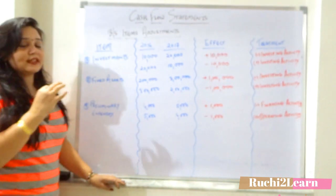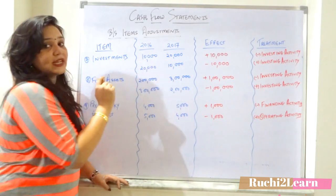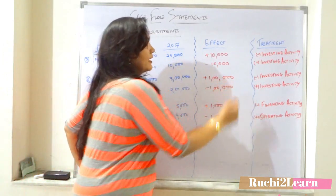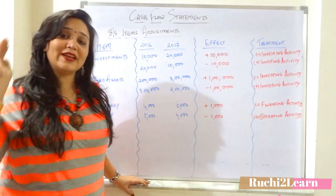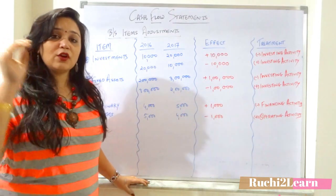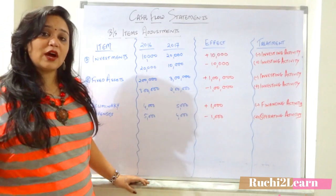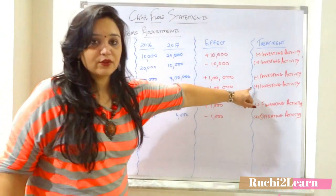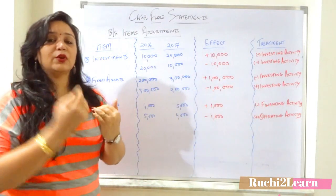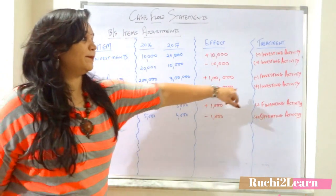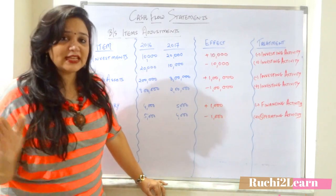Next, fixed assets — same principle. If fixed assets increase, say from 2 lakh to 3 lakh, that means 1 lakh has increased. You have invested in fixed assets, your cash has flowed out, so it is negative. If there is a decrease, your cash has flowed in because you have sold that asset, so it will be positive. It is an investing activity in both cases.